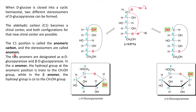The stereoisomers formed from this anomeric carbon are called anomers. Two kinds of anomers are formed: alpha anomers and beta anomers. In alpha anomers, the hydroxyl group at carbon 1 is present trans to the CH2OH group on carbon 5 — this is called alpha-D-glucopyranose. In beta-D-glucopyranose, the hydroxyl group at position 1 is present on the same side as the CH2OH group on carbon 5, in CIS configuration.